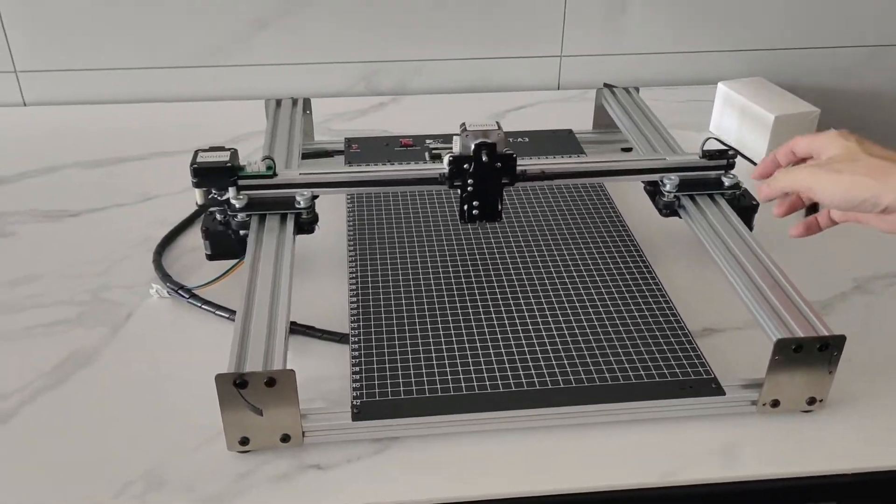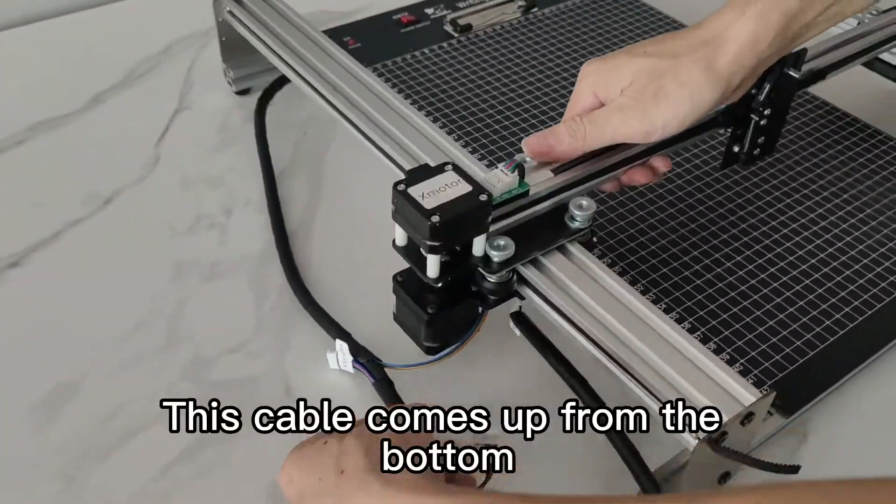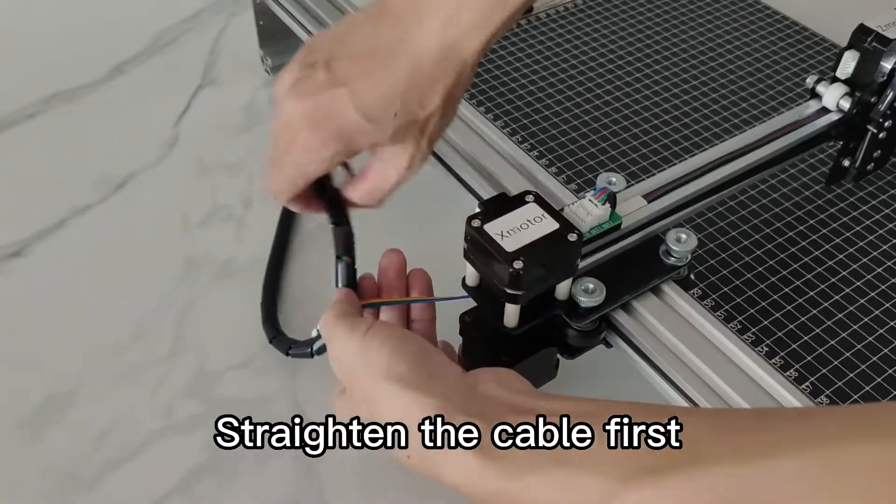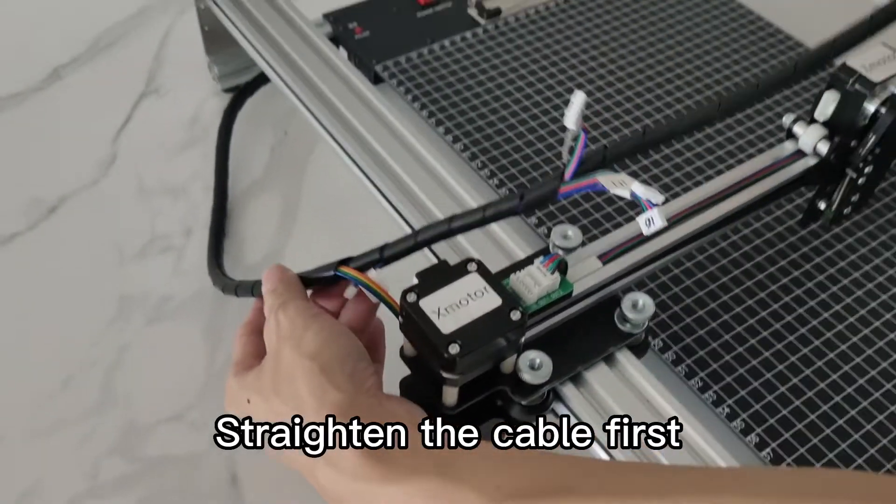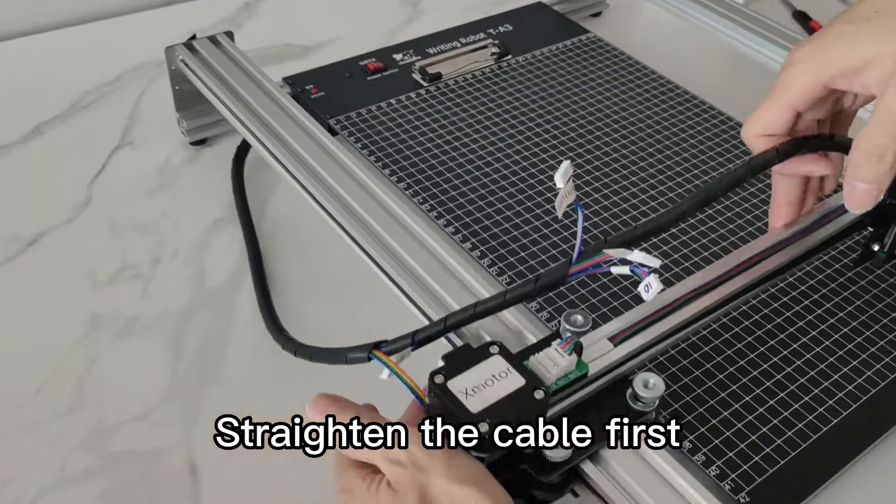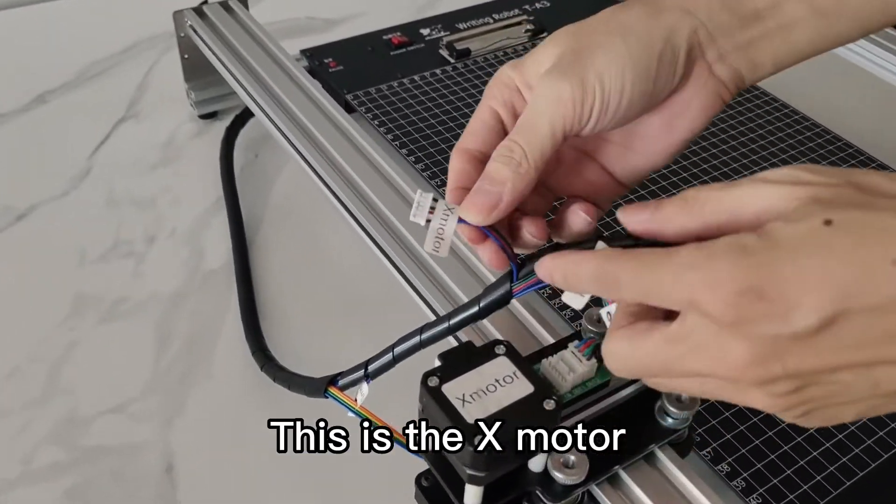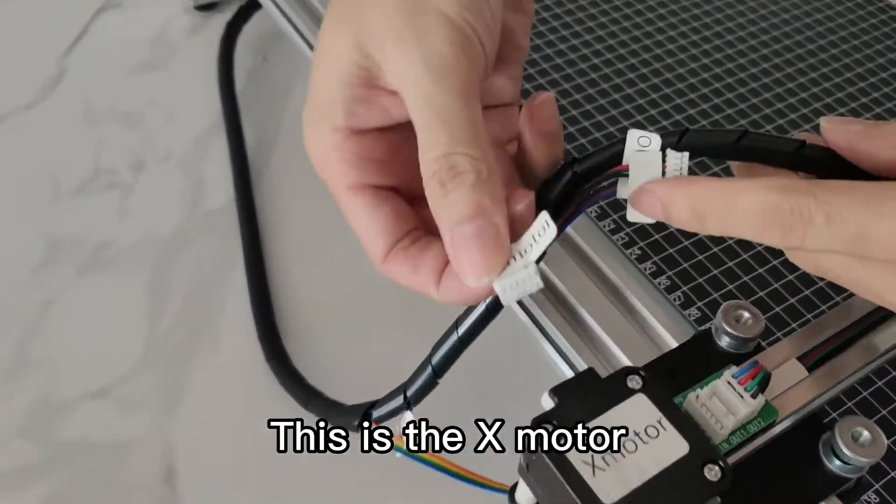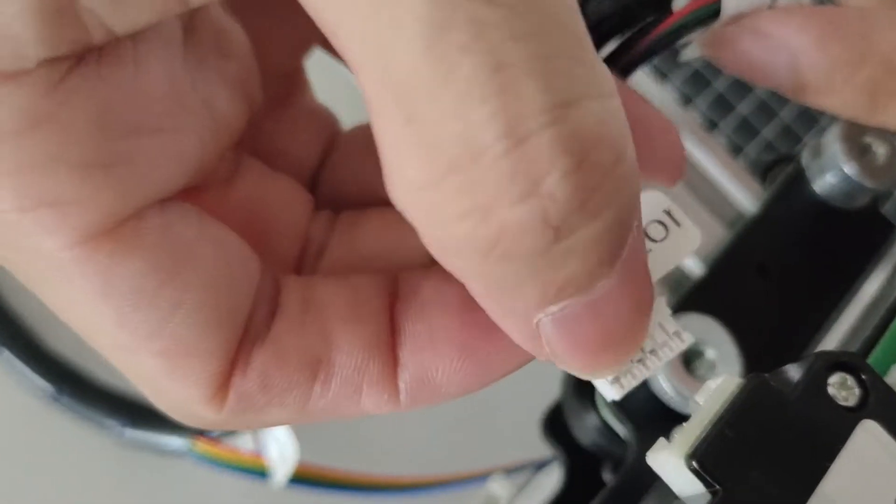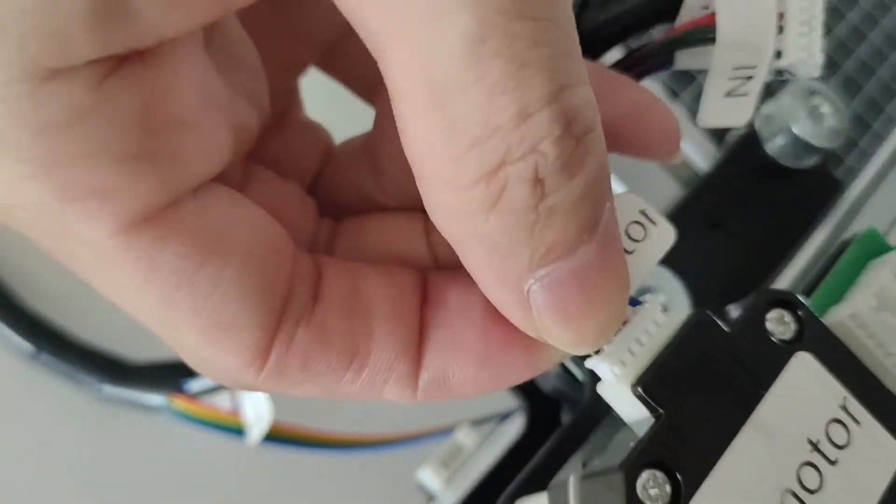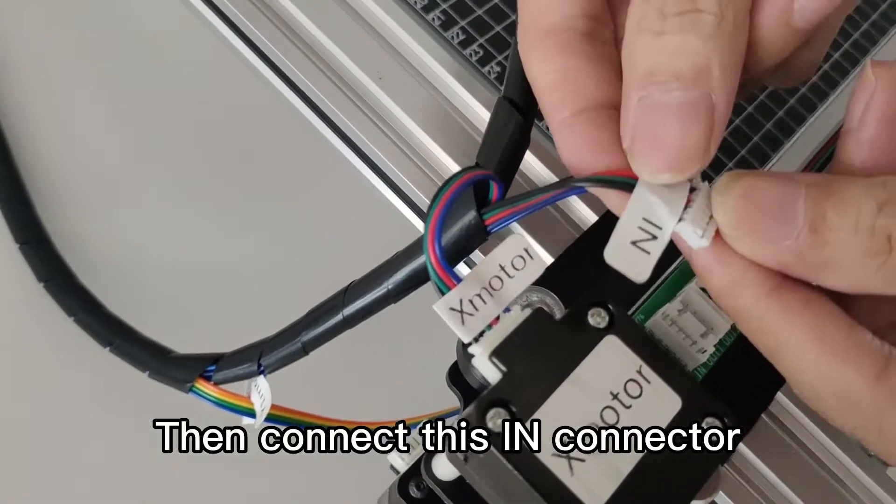Next, wiring. This cable comes up from the bottom. Straighten the cable first. This is the x-motor. Next, connect this in-connector.